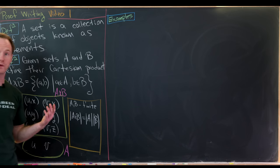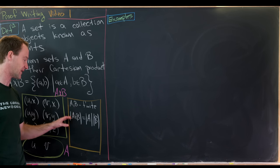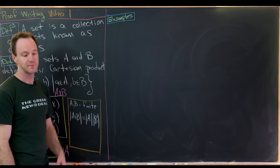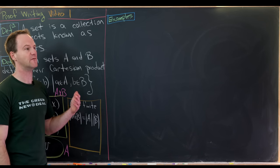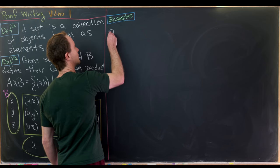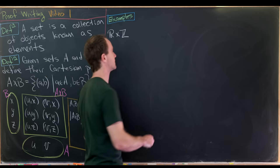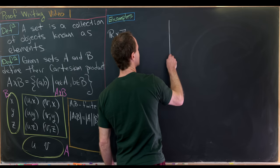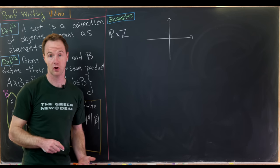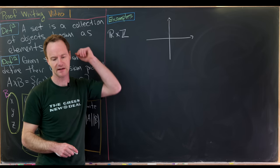A fact we won't prove right now is that if A and B are finite, then the size of A × B equals the size of A times the size of B. Notice the Cartesian coordinate plane is just ℝ × ℝ, sometimes written as ℝ².